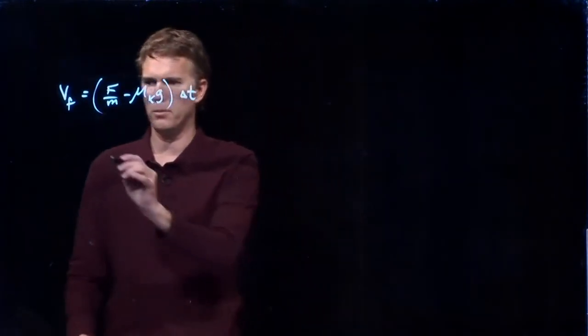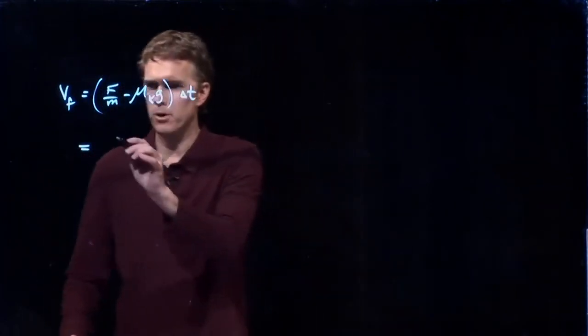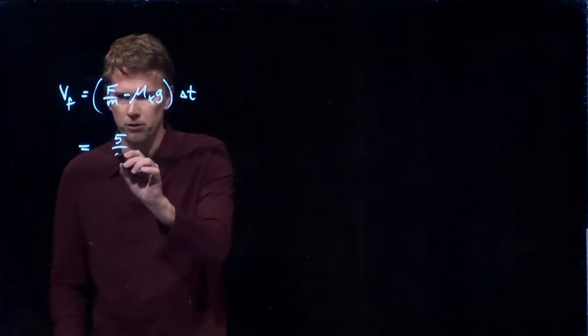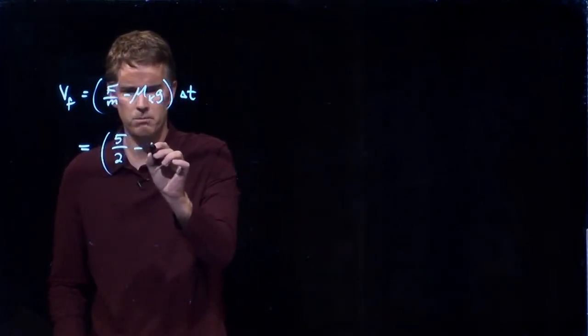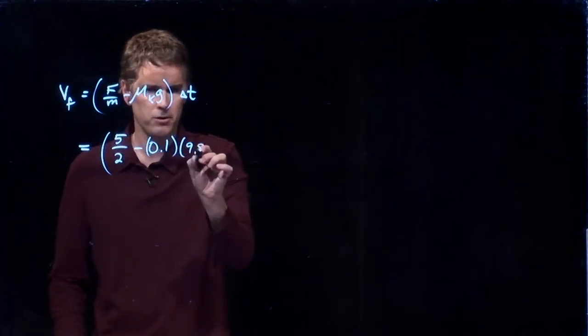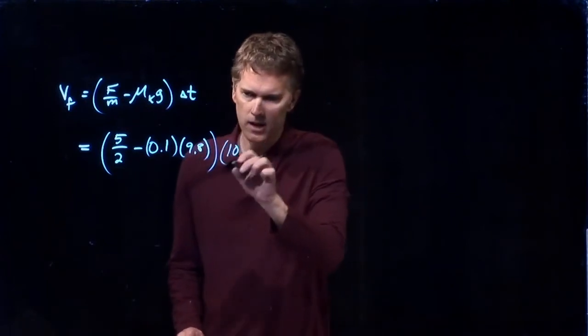Let's plug in some of our numbers and see what we get. So we said that f was 5 newtons. The mass was 2 kilograms. Mu k, we said, was 0.1. G is, of course, 9.8. And we do this for 10 seconds. So we are all in SI units there. 5 over 2 is 2 and 1 half. 9.8 times 0.1 is 0.98.